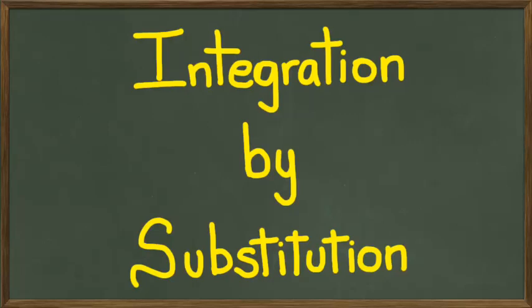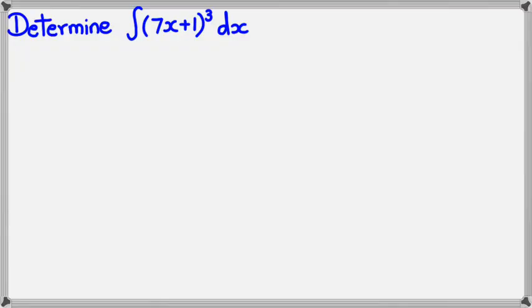Hey guys, in this session we're going to be doing integration by substitution. This is probably an easier way to integrate compared to using chain rule in reverse, so if you are struggling a bit with chain rule in reverse, do integration by substitution. Okay, so to get started with substitution, here's an example: determine ∫(7x+1)³dx.